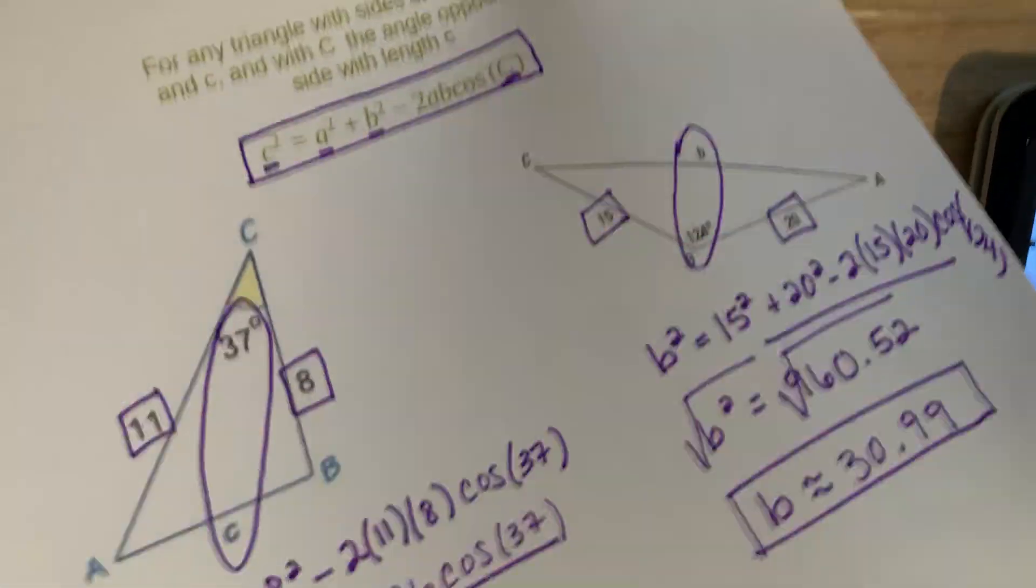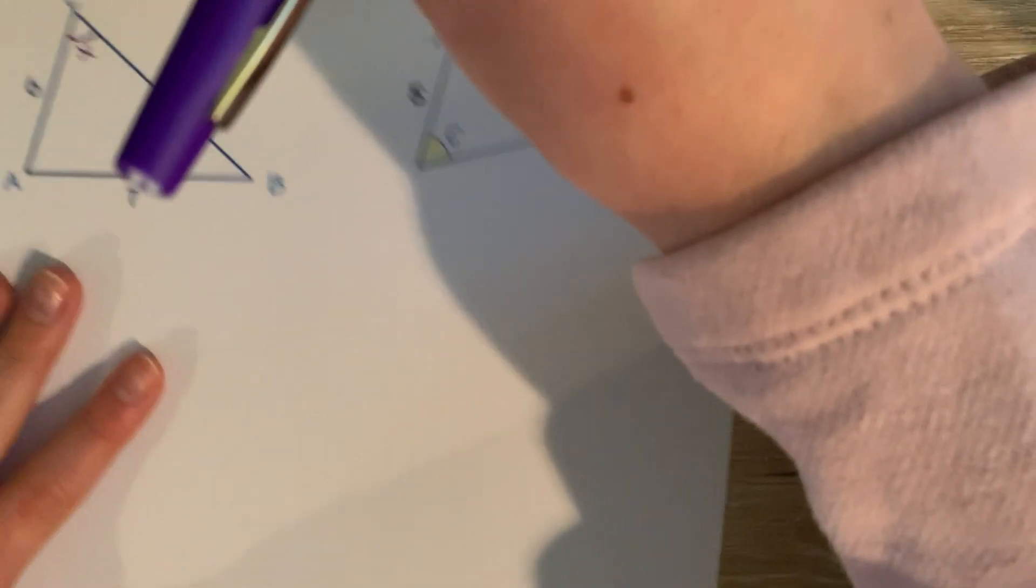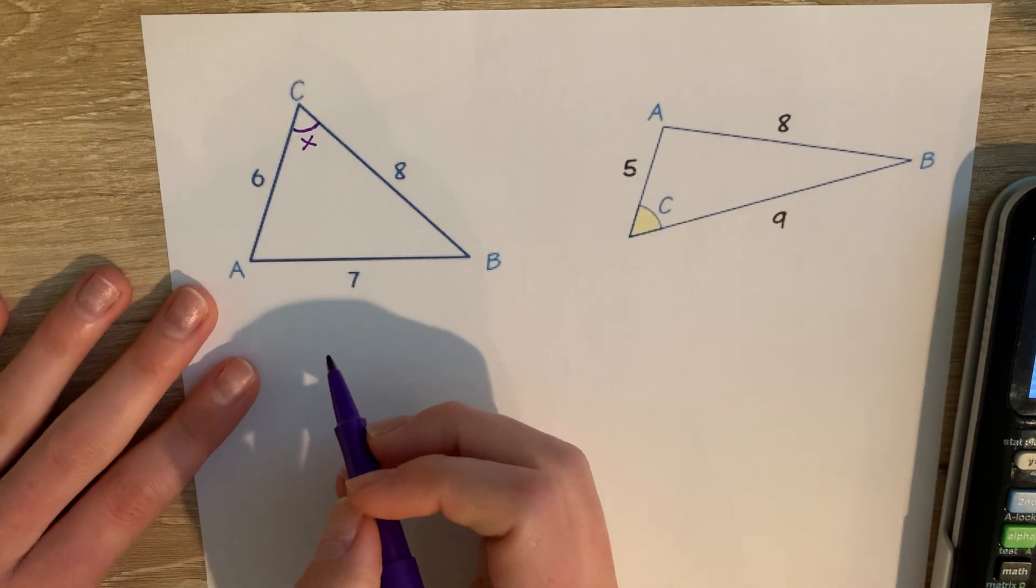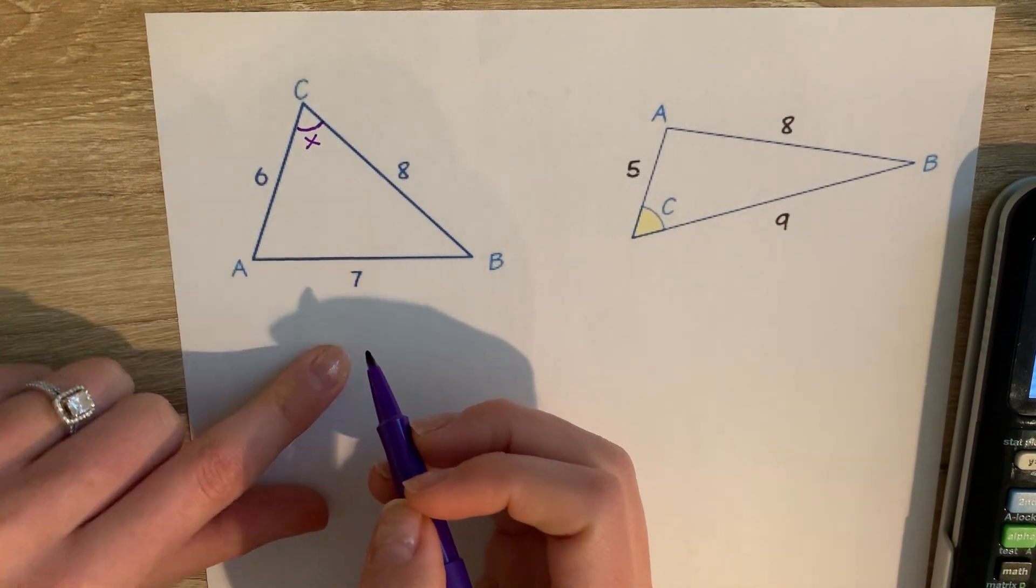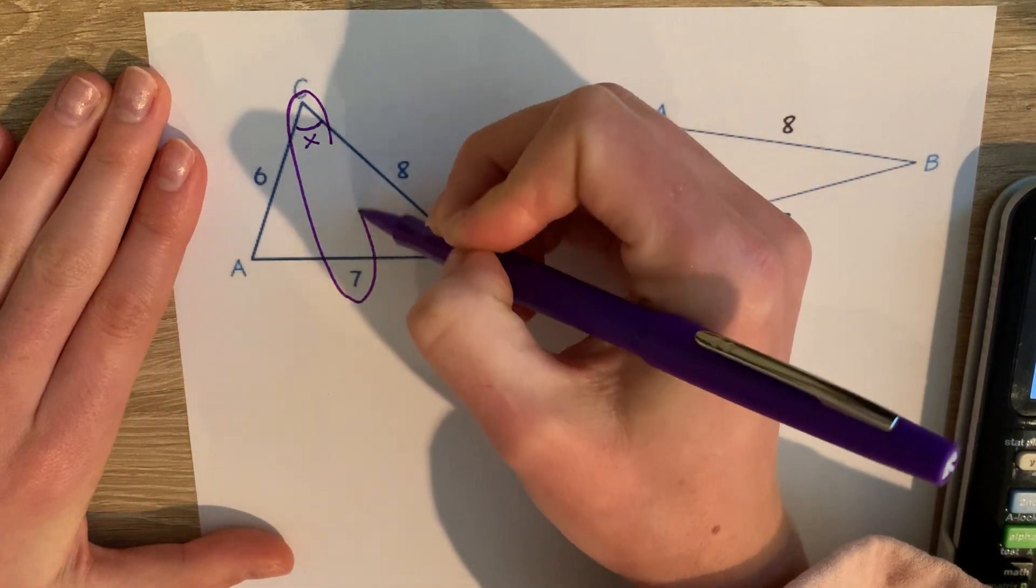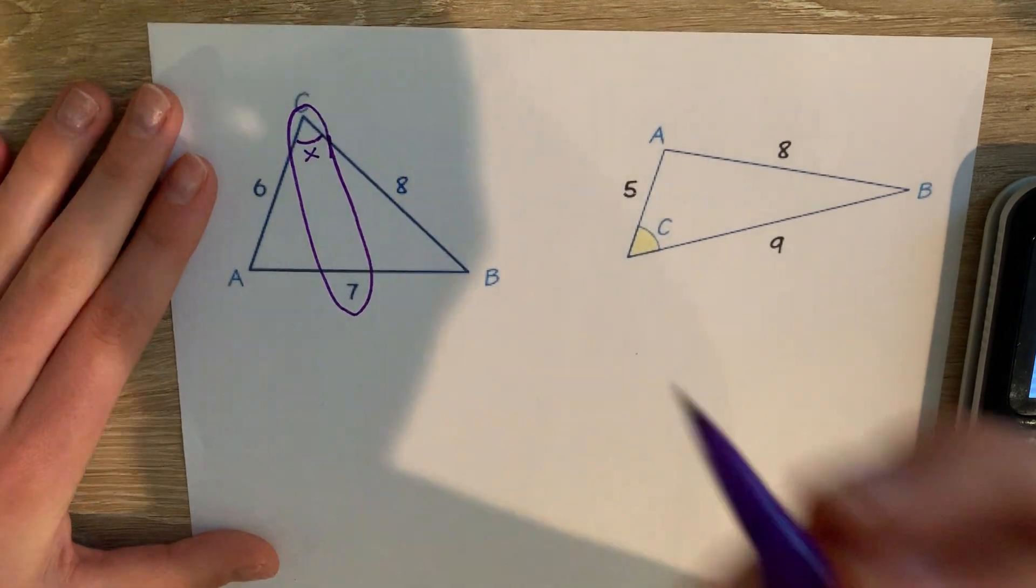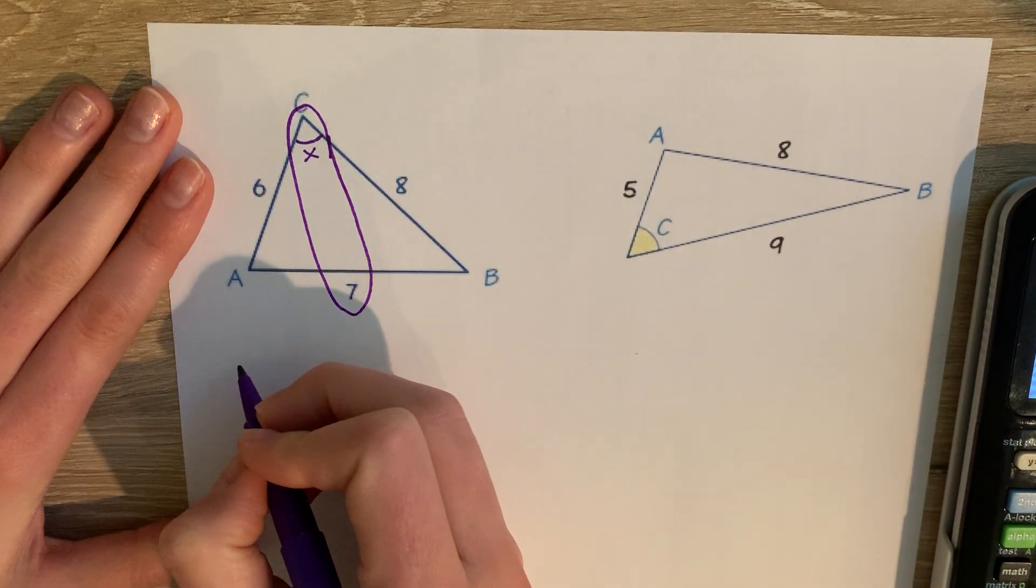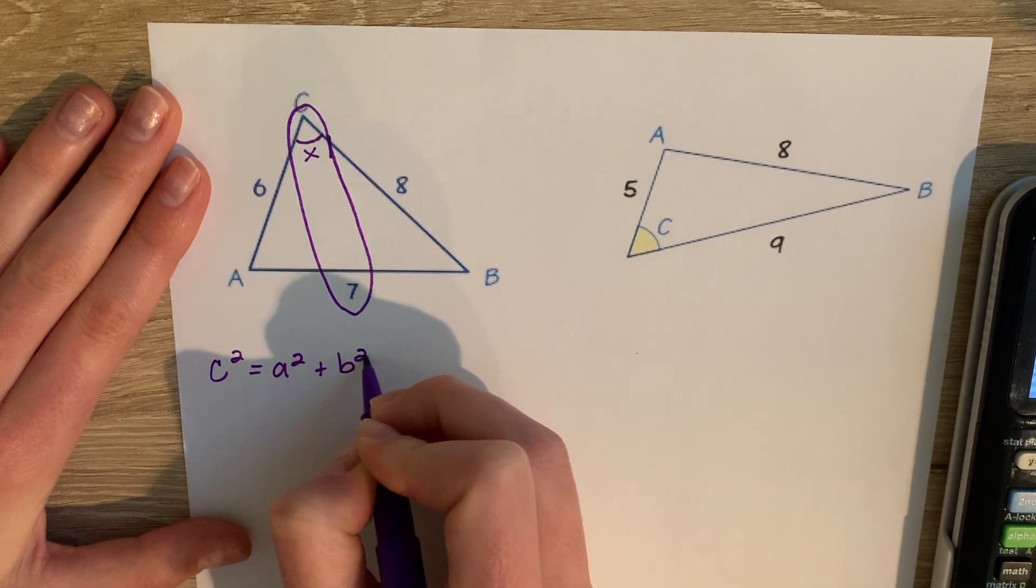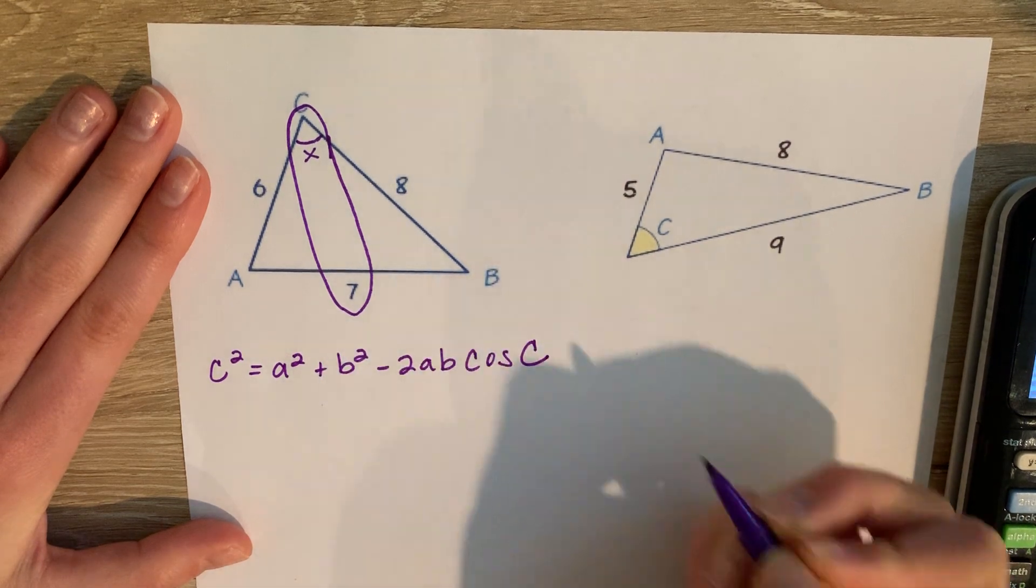The next two examples are when we are trying to find an angle. So notice in this example, we're trying to find angle x. And notice that this is my pair. All right, so remember back to our formula. I will rewrite it. We had c squared equals a squared plus b squared minus 2ab cosine of c.